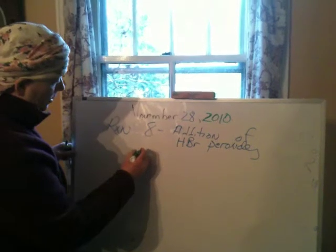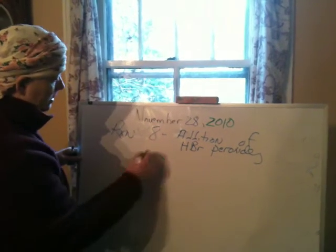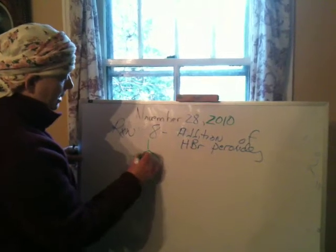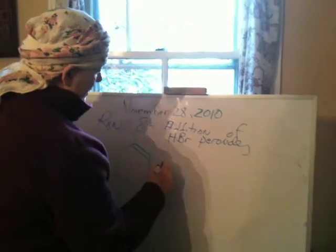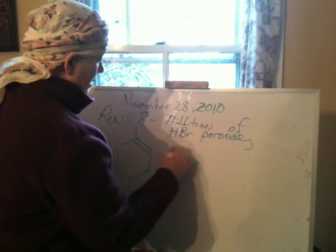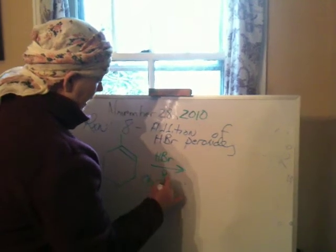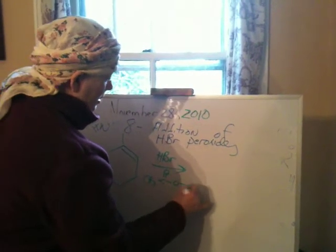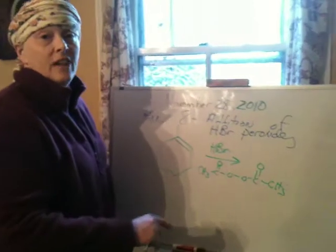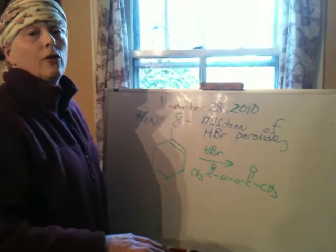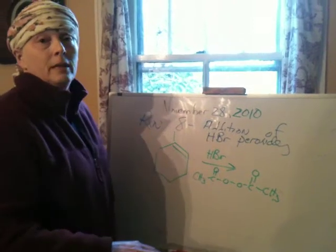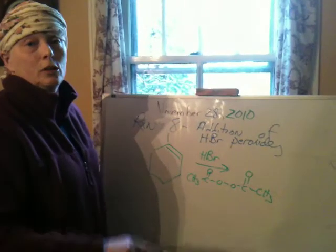Supposing you had this structure and you were adding HBr in the presence of a peroxide. A typical peroxide would look like this. What is a peroxide? It is a compound that has two oxygens single-bonded to each other. They're very reactive. This is something you're afraid of in lab — peroxides, when they're dry, detonate.